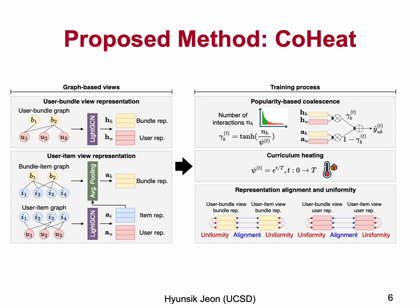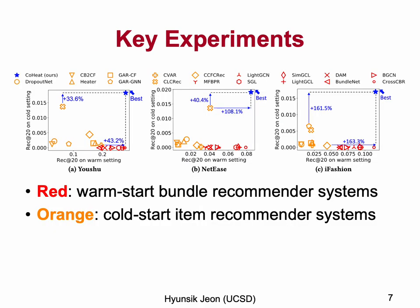To address these three main challenges, we propose CO-HIT, which is illustrated as follows. To address the extremely skewed interactions, we propose a popularity-based coalescence in estimating the relevant scores. To effectively learn user-item view representations, we propose a curriculum learning-based approach. Then, we adopt representation alignment and uniformity to bridge the gap between the two views. As a result, our proposed CO-HIT achieves state-of-the-art performance in both cold-start and warm-start bundle recommendation.